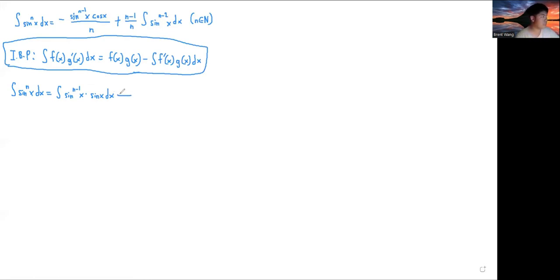Now from this, it is evident that we can say f of x is equal to sine n minus 1 x, and g prime x is sine of x.